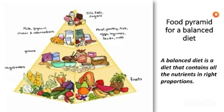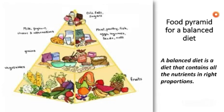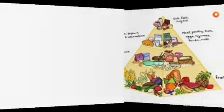A balanced diet is a diet that contains all the nutrients in the right proportion. The vegetable and fruit group is required in the most amounts, so it is at the base of the pyramid. Next are grains and cereals — chapati, bread — on the second or third layer. The milk group, including cheese and paneer, and the meat and fish group are placed at the second level. The topmost layer is of essential oils, fats, and sugars — not the extra ones that make you obese, but the essential ones.